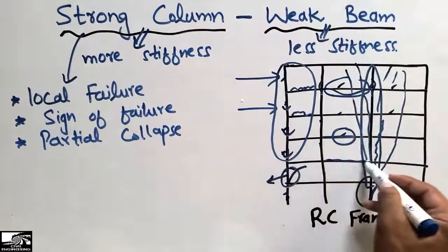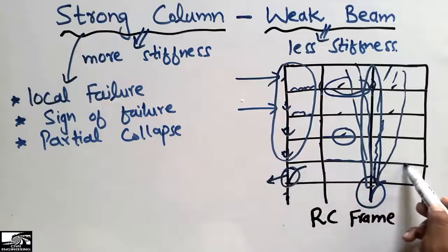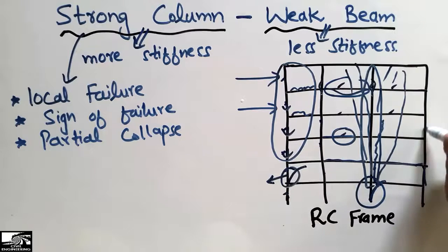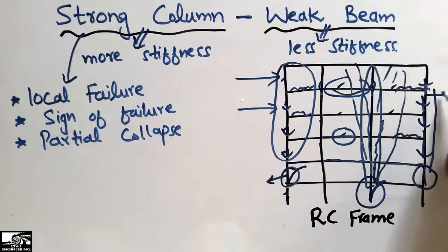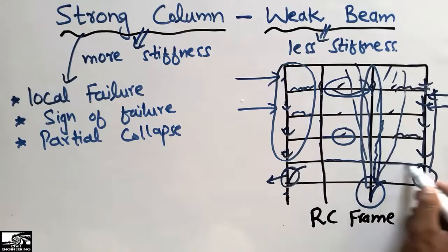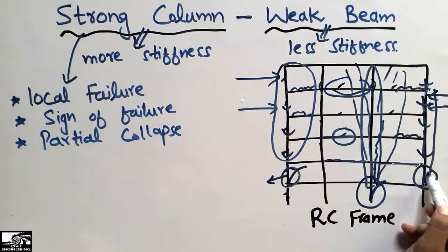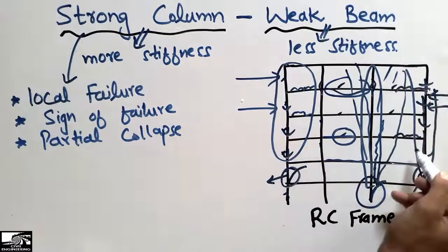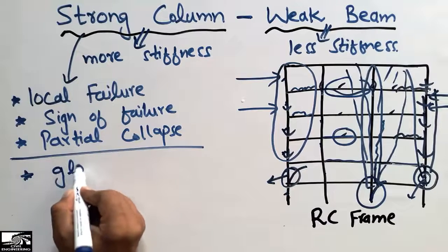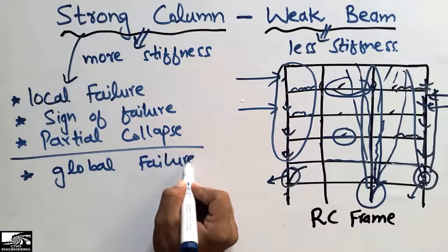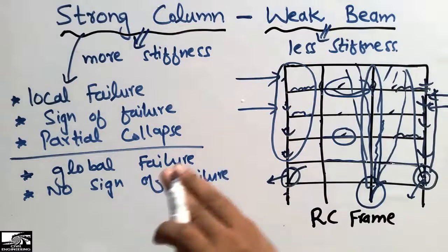Now consider the strong beam and weak column case. The beam is strong and the column is weak. Loads coming from upper floors, beam loads, and lateral loads all come onto this weak column. The column is not able to support the load, so when this column collapses, your whole structure collapses. This means we get a global failure — the whole structure collapses with no sign of failure. We cannot identify the failure condition; it happens suddenly.